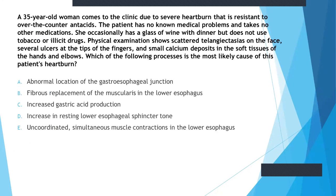Before we finish, let's do one more question. Which of the following processes is the most likely cause of this patient's heartburn? A 25-year-old woman comes to the clinic due to severe heartburn resistant to over-the-counter antacids. She has no other medical problems and takes no medications. She occasionally has a glass of wine with dinner but does not use tobacco or illicit drugs. Physical examination shows scattered telangiectasias on the face, several ulcers at the tips of the fingers, and small calcium deposits in the soft tissues. The answer choices are: abnormal location of the gastroesophageal junction; fibrous replacement of the muscularis in the lower esophagus; increased gastric acid secretion; increased resting lower esophageal sphincter tone; or uncoordinated simultaneous muscle contraction in the lower esophagus.